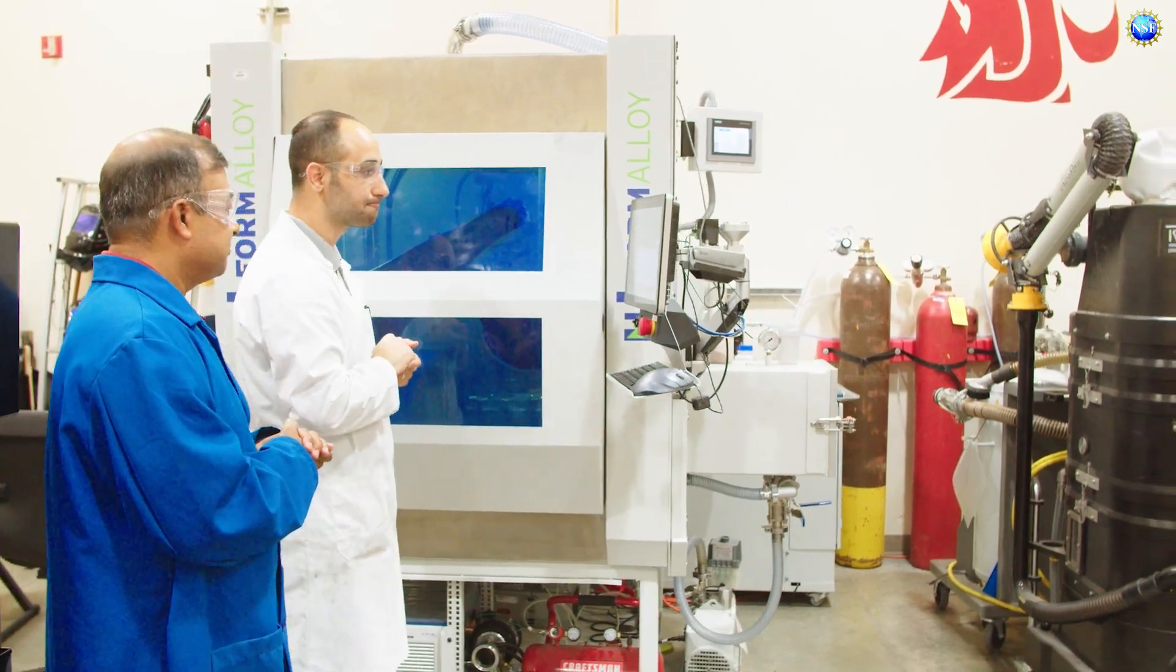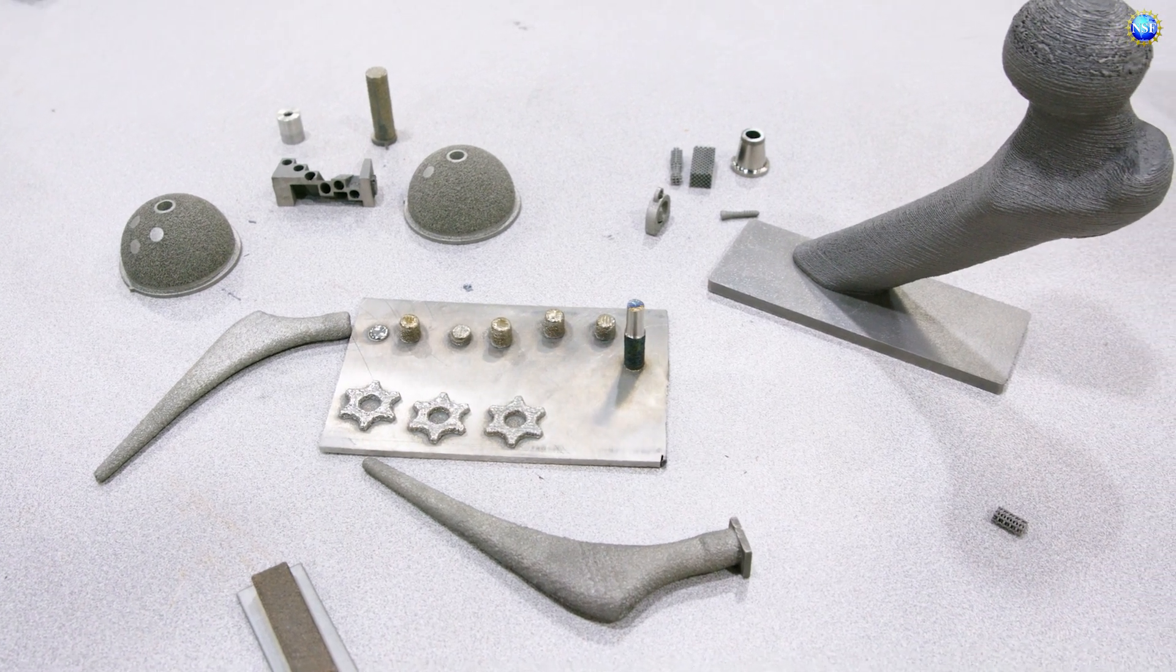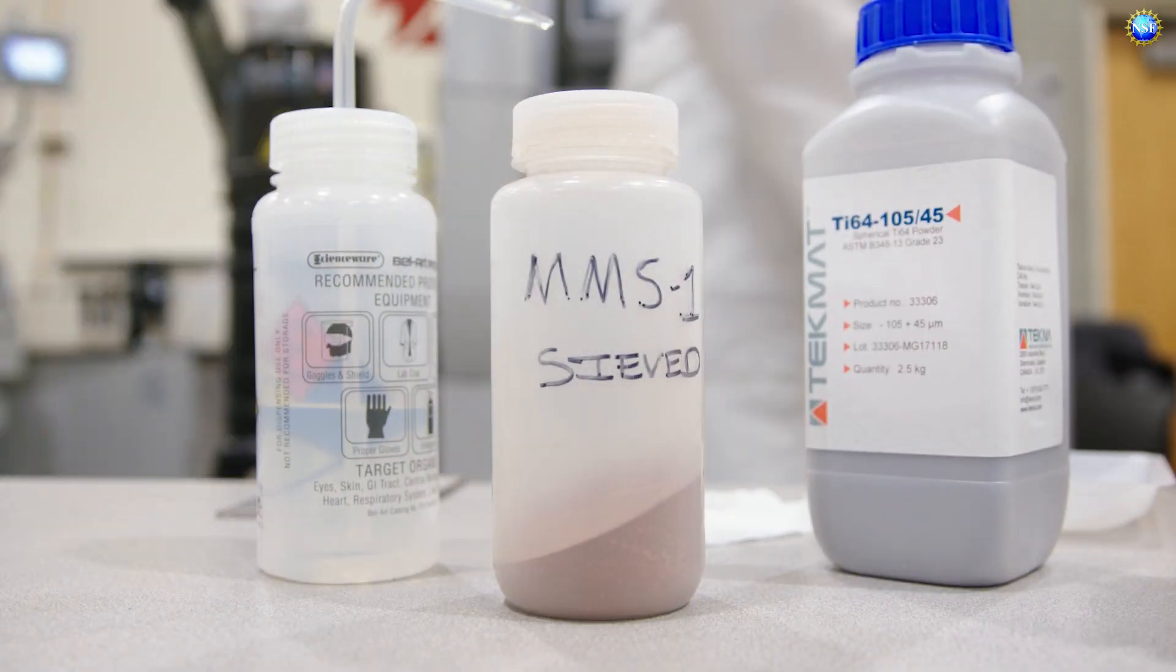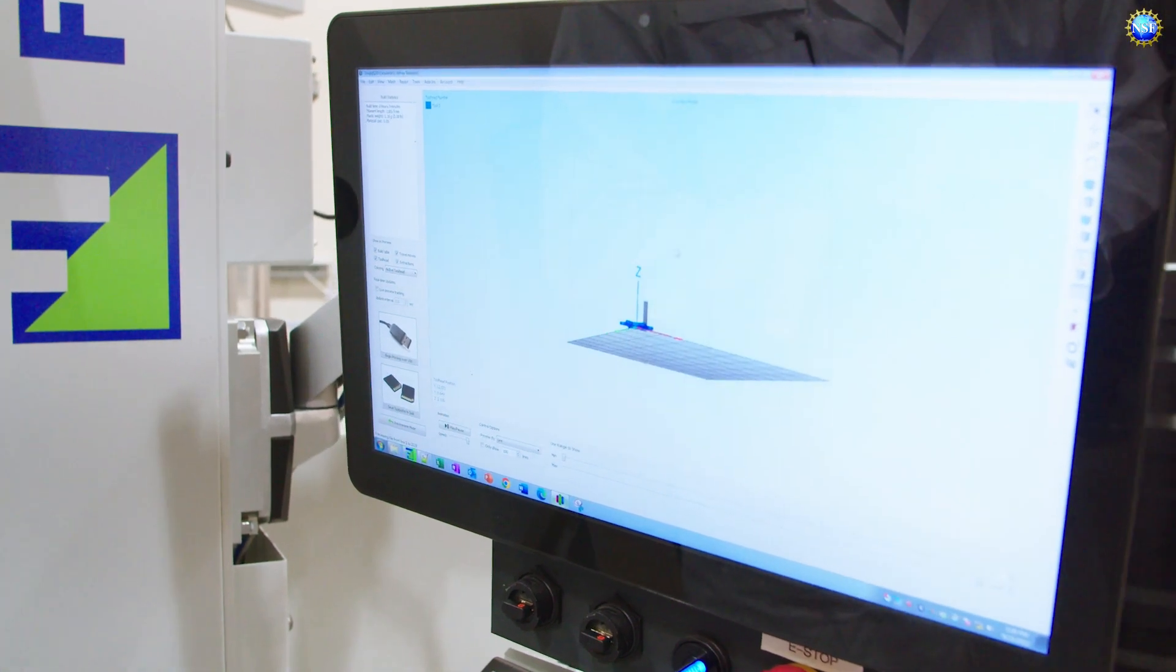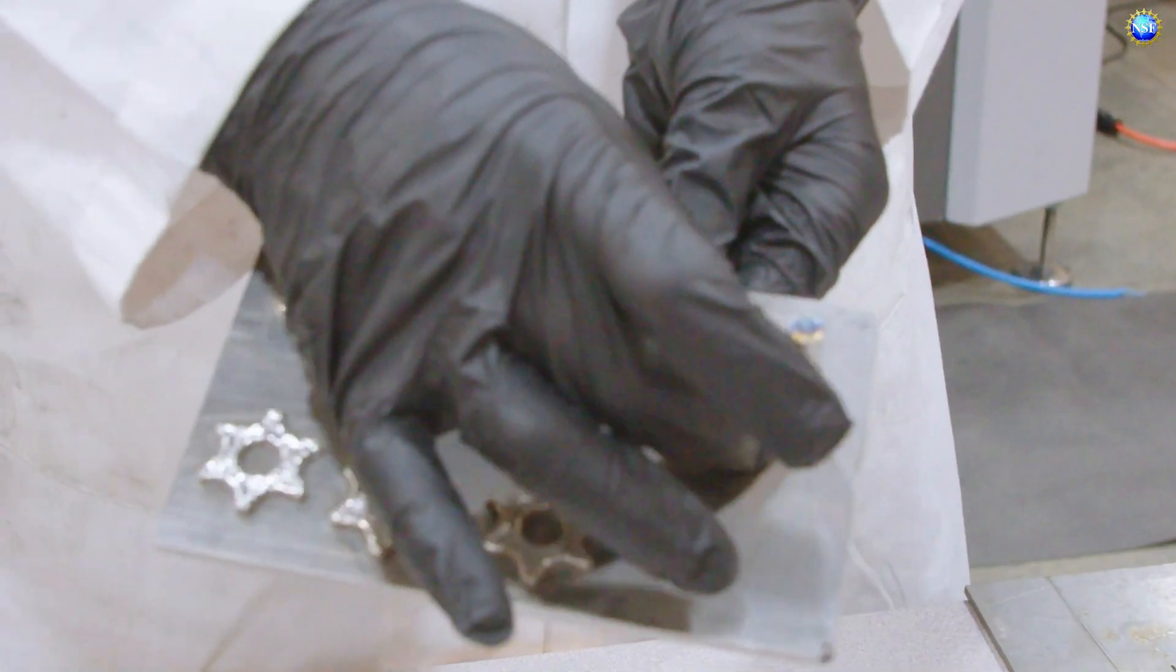NSF-supported researchers at Washington State University have developed processes and materials that may pave the way. Using a powder-based 3D printer, they mix simulated Martian rock dust with a titanium alloy, a metal known for its strength and heat-resistant properties.